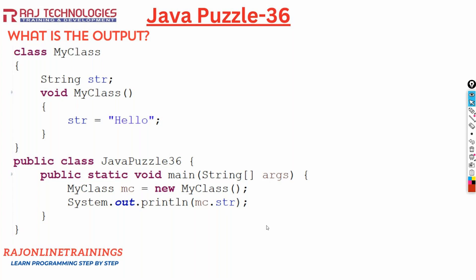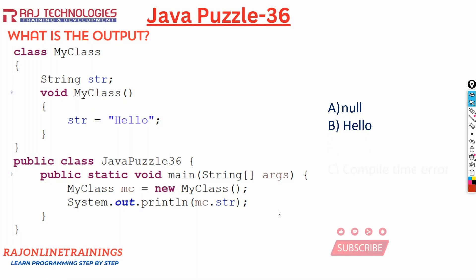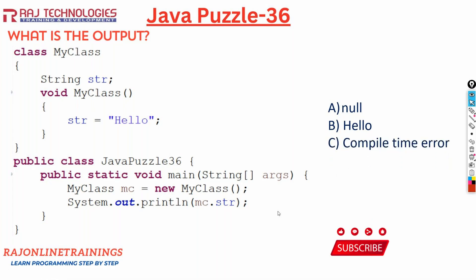Now let us see the options for this program. The options are: option A - null, option B - it's going to display hello, option C - compile time error, and option D - 0.